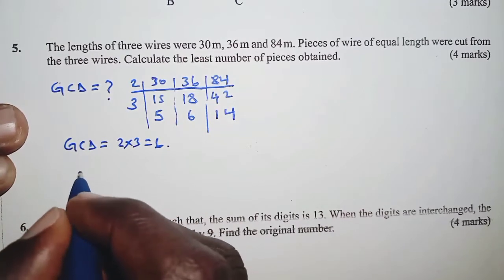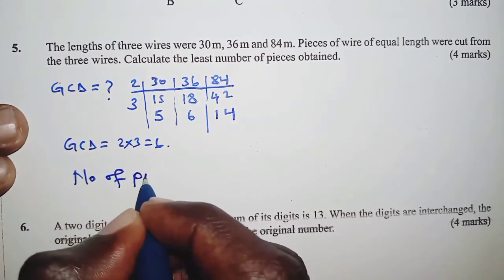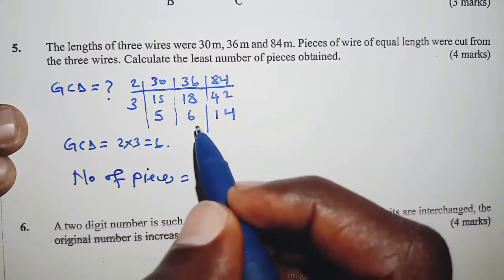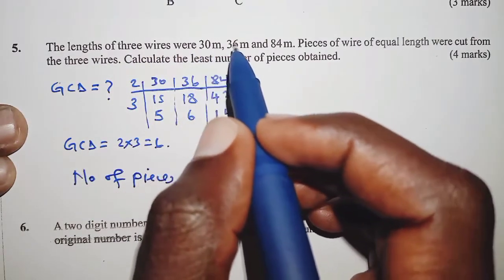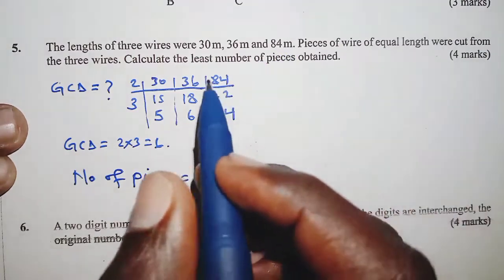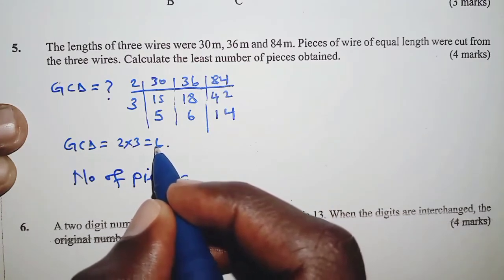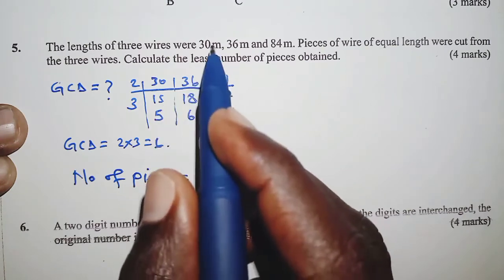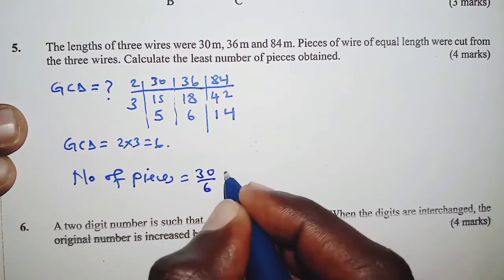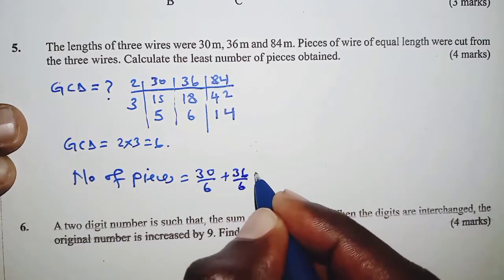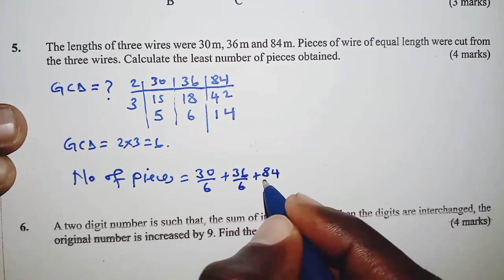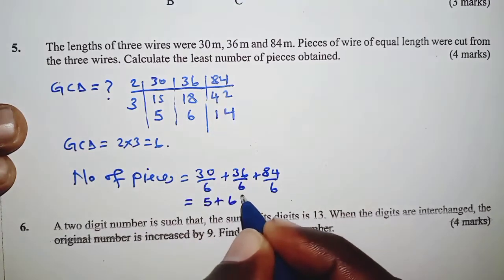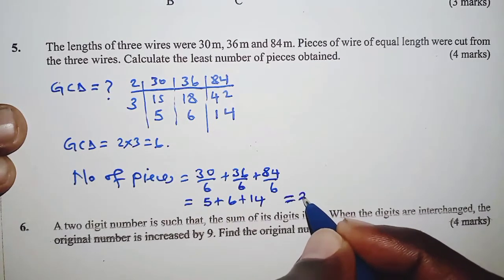From here, we can therefore determine the number of pieces. Remember, if each piece measures 6 meters long, then we had 3 wires, 30 meters wire, 36 meters wire, 84 meters wire. So in order to get the number of pieces for 30 meters, we simply divide by 6 meters. So we'll argue that if 6 meters represents one piece, how about 30 meters. So we'll have 30 divided by 6, and the same should apply for 36 and 84. And this should give us 5 plus 6 plus 14, and that finally is 25 pieces.